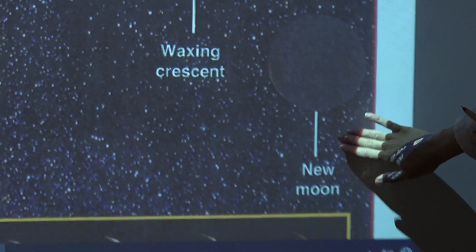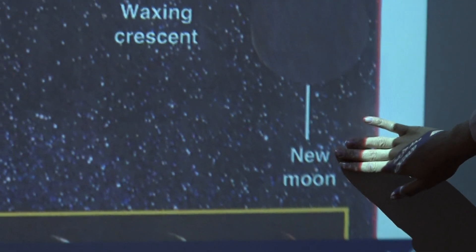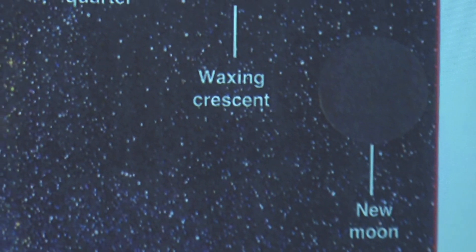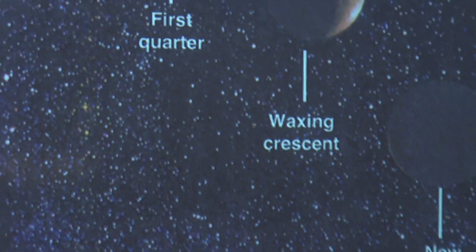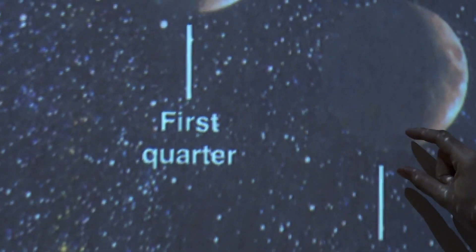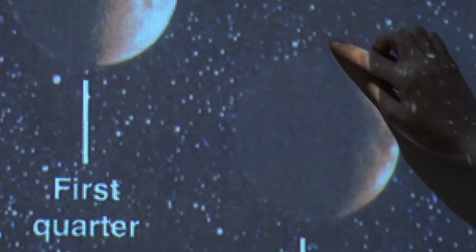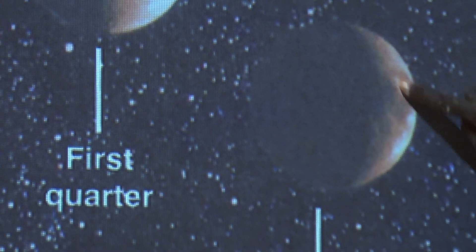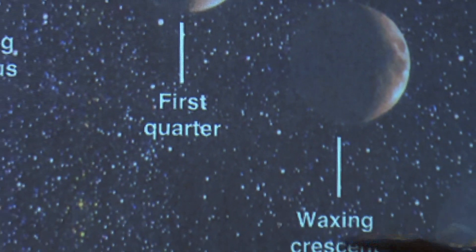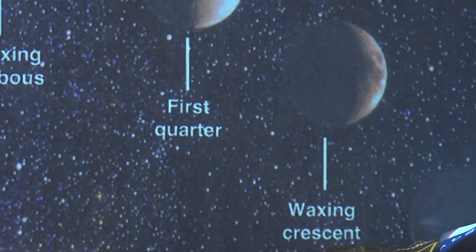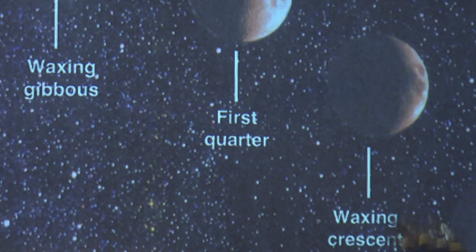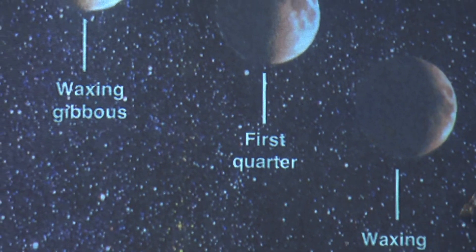At the beginning we don't see the moon — there's no light. This phase is called new moon. After that, after about two days, we can only see a thin light part of the moon.